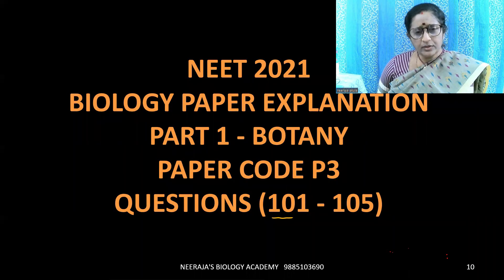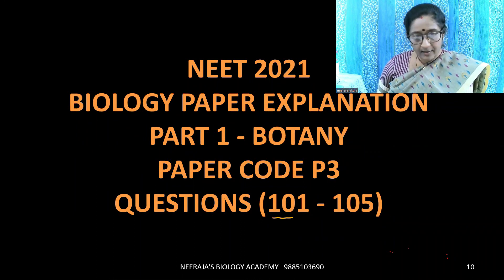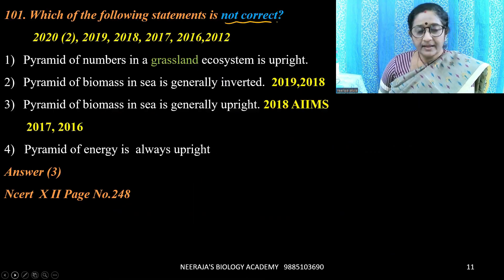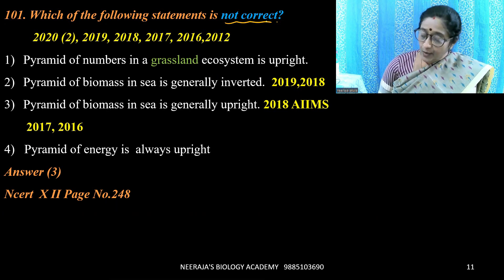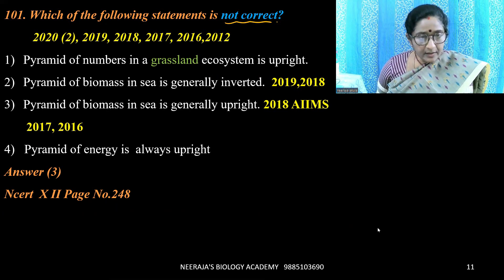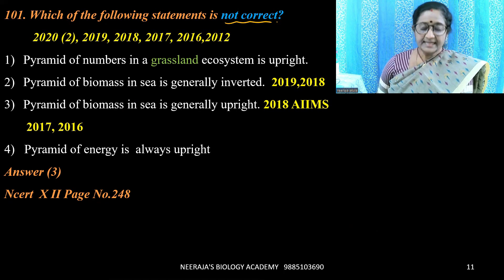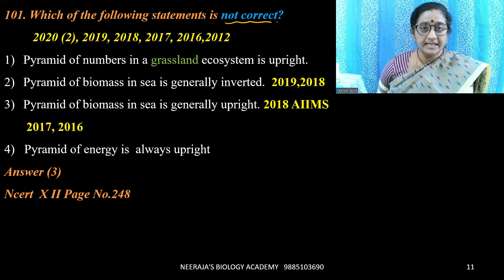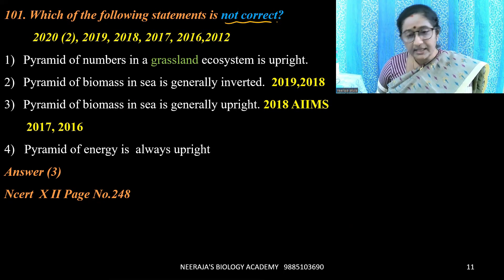Now let us go to the analysis of the 2021 botany paper, questions 101 to 105 — NEET 2021 Biology Paper, Part 1, Botany. Question 101: Which of the following statements is not correct? It is related to ecological parameters. Charles Elton is the scientist who developed ecological pyramids — a graphical representation of various ecological parameters at successive trophic levels.